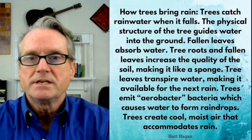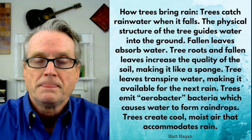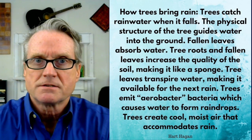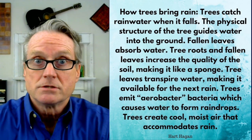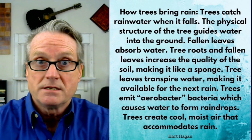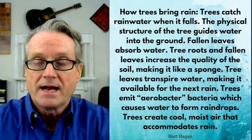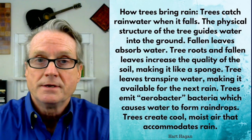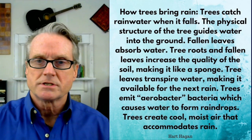Trees also emit aerobacter bacteria. Aerobacter is a nucleus for precipitation. Precipitation or rain occurs because you need those precipitation nuclei, and there are three kinds: salts, aerobacter, and ice crystals.